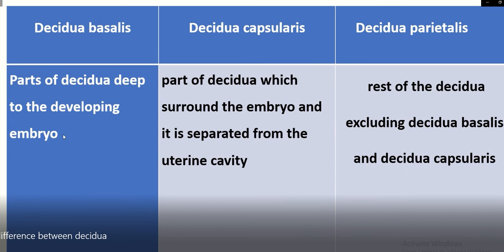So summarizing the differences: decidua basalis is the part of the decidua deep to the developing embryo; decidua capsularis surrounds the embryo and is separated from the uterine cavity; and the rest of the decidua, excluding decidua basalis and decidua capsularis, is known as decidua parietalis.